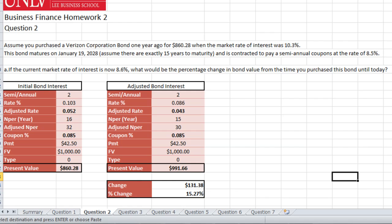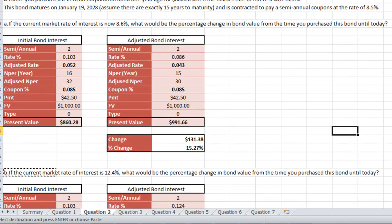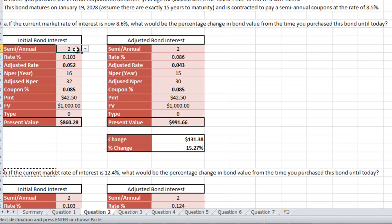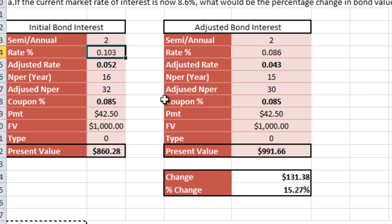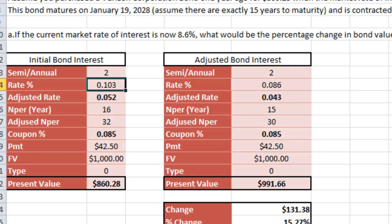Question one: if the current market rate of interest is now 8.6%, what would be the percentage change in the bond value from the time you purchased it until today? For this we're going to be using our present value formula, as used in the previous question. The bond is paid semi-annually, so we have two for that. The rate is at 0.103, or 10.3%, located right here.